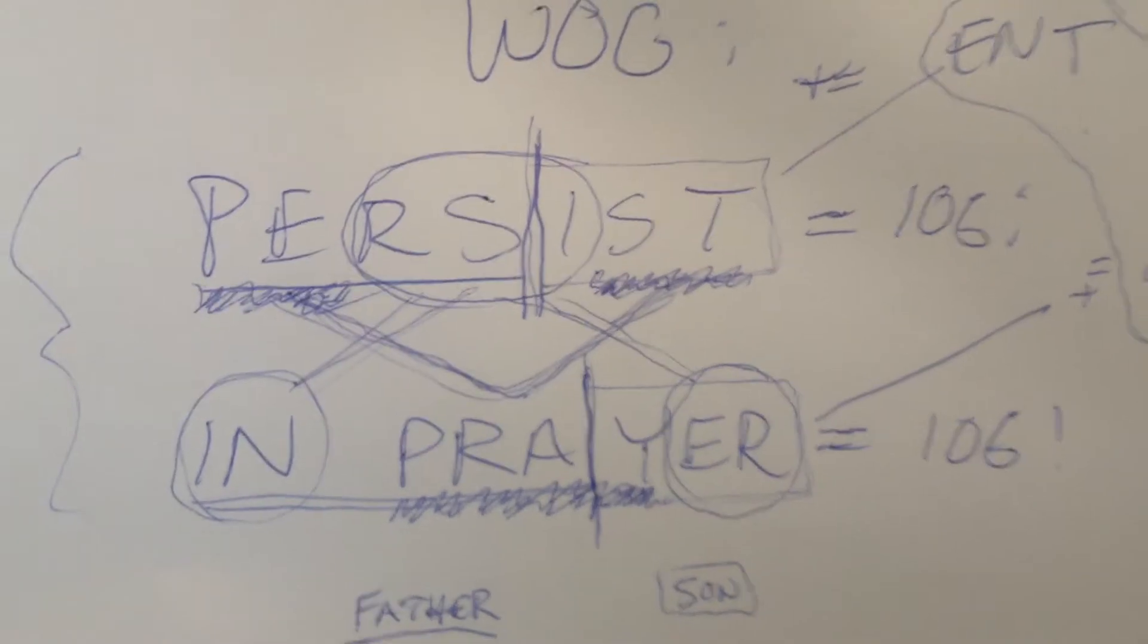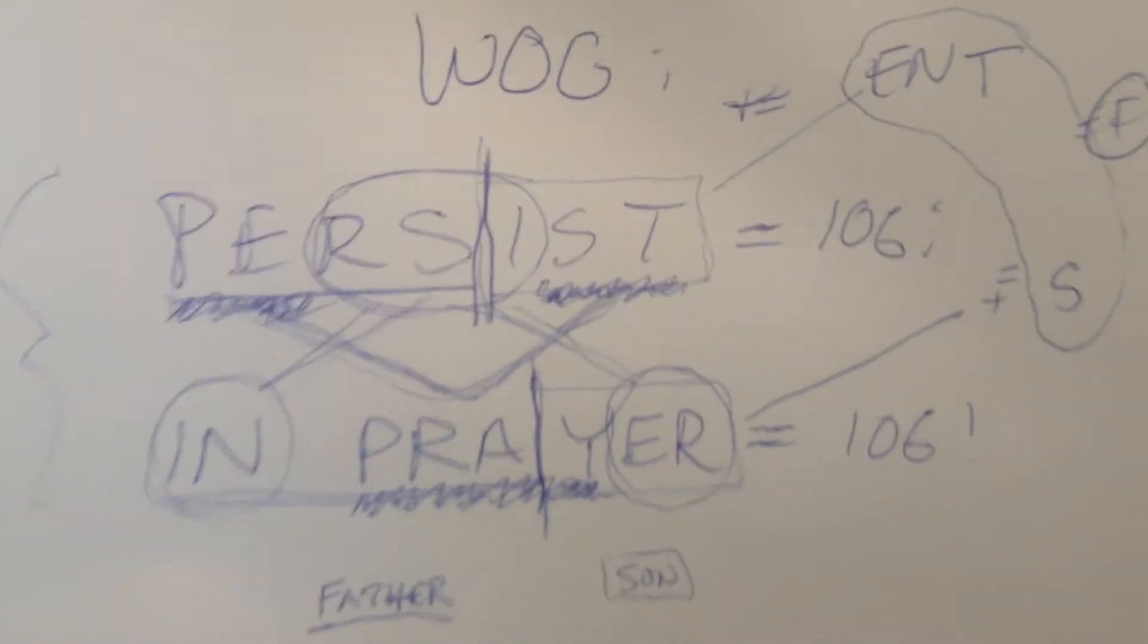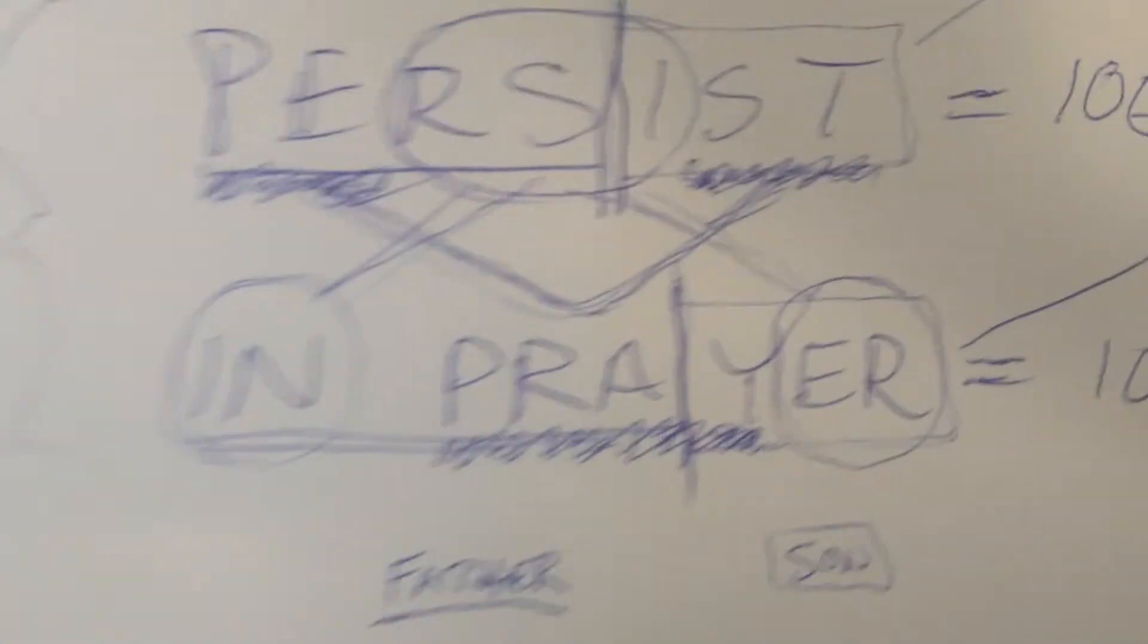But I'm here to reveal the glory, the mathematical perfection of English, as always, to the glory of the personal names of God. Persist in prayer is father, son, father, son.